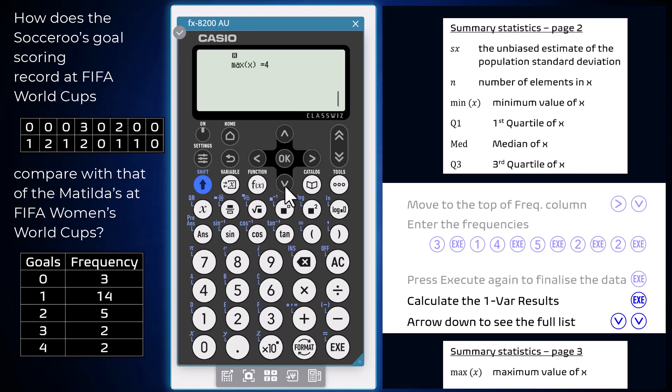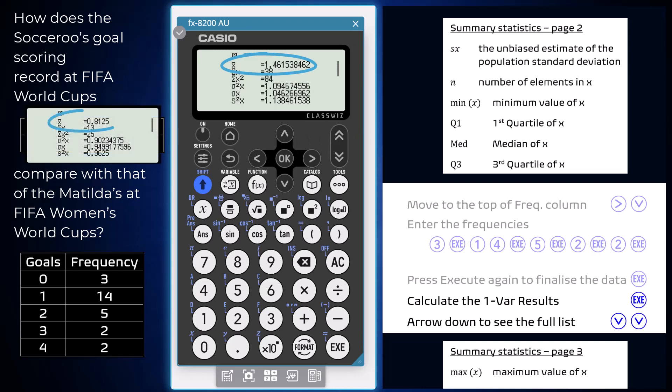As those summary statistics show, the Matildas record at World Cups is significantly more high scoring than that of the Socceroos, with a mean of nearly 1.5 goals per game, compared with less than one goal a game.